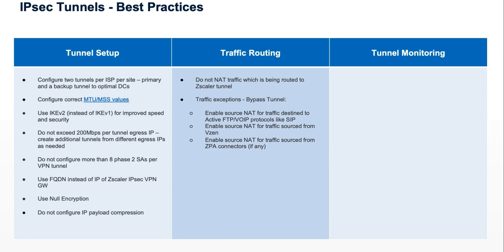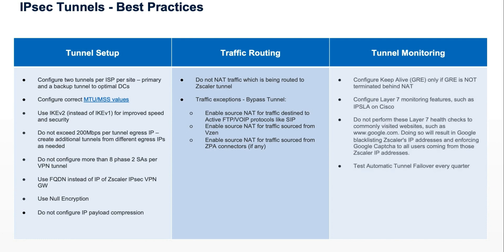Don't NAT traffic before it's routed to Zscaler. Apply the same traffic exceptions — you should bypass the tunnel for connections such as VoIP or SIP, or anything that needs a source IP, such as a private service edge or the ZPA connector, to route directly rather than through the tunnel.